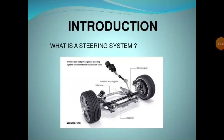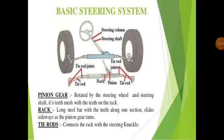The next topic in automobile engineering is the steering system. The steering system is a mechanism that allows the vehicle to move in whichever direction you choose. Using the steering wheel, you can guide the vehicle in the desired direction. It is a simple mechanism for controlling the movement of the vehicle along the intended path.